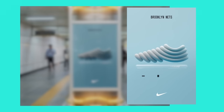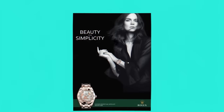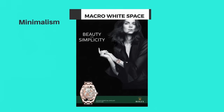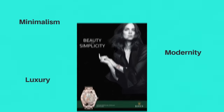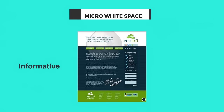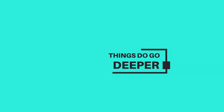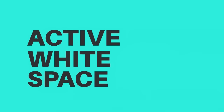Having lots of macro white space creates emphasis and hierarchy on the focal point, making the design more noticeable. One rule of thumb is that more macro white space can suggest minimalism, modernity, and luxury. Whereas if the balance is shifted more to micro white space, the design can be seen as more informative and serious. But things go deeper than just macro and micro — we can enhance designs with the use of passive and active white space.